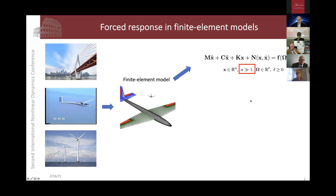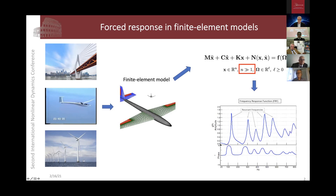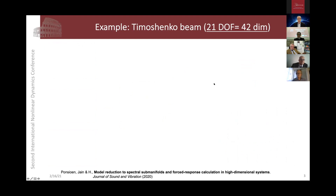The key part I want to deal with: when you calculate forced response in these systems, the classic diagram shows how a particular node in the system reacts to forcing — the horizontal axis is the forcing frequency, the vertical axis is the amplitude, and you recover this classic forced frequency response function. For linear systems, these are nice spikes without fold-overs, but with strong nonlinearities you get the well-known nonlinear behavior.